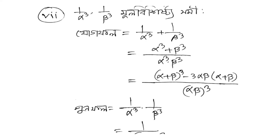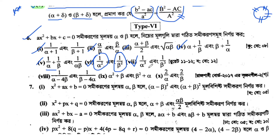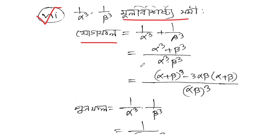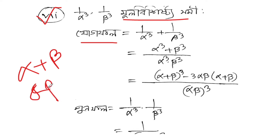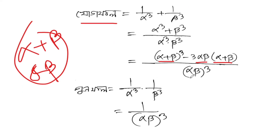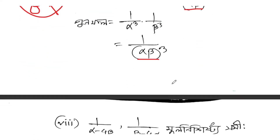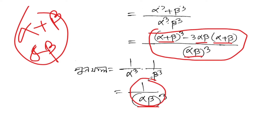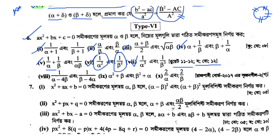Now: 1 by alpha cube plus 1 by beta cube. The sum is (beta cube plus alpha cube) over (alpha beta) cube. Now alpha cube plus beta cube — we use the formula: a plus b whole cube minus 3ab(a plus b). So alpha cube plus beta cube equals (alpha plus beta) whole cubed minus 3 alpha beta (alpha plus beta). Substituting the known values of alpha plus beta and alpha beta, then we form the equation x squared minus (sum)x plus (product) equal to zero.